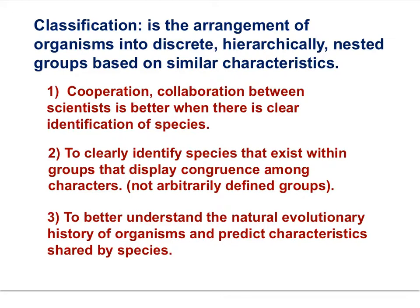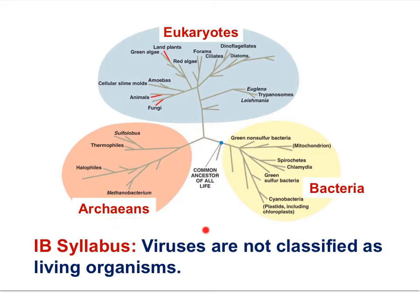Classification also has value to better understand the natural evolutionary history of organisms and predict characteristics shared by species. All organisms on Earth are classified into three domains — the highest and most inclusive of all taxonomic groups. The domains are bacteria, the archaeans, and the eukaryotes. Plants, animals, and fungi are eukaryotes.